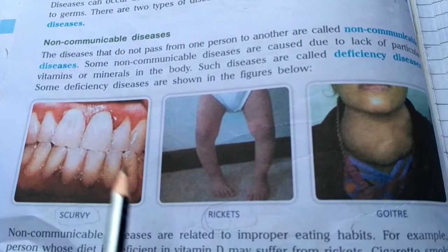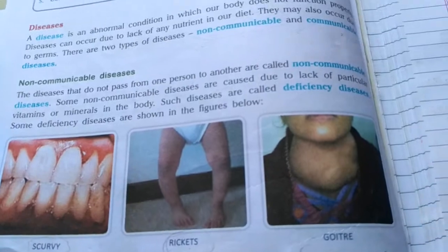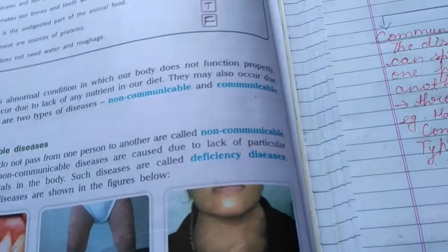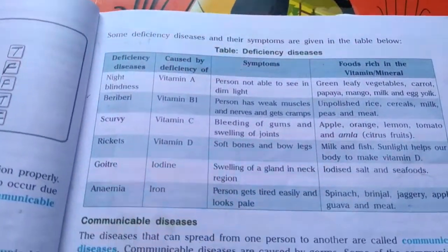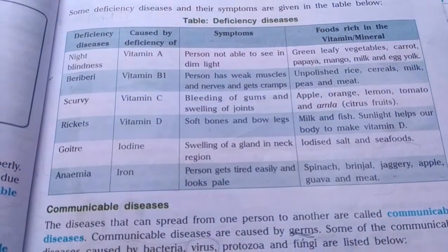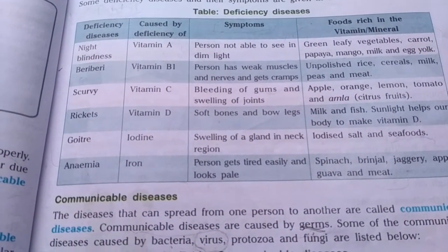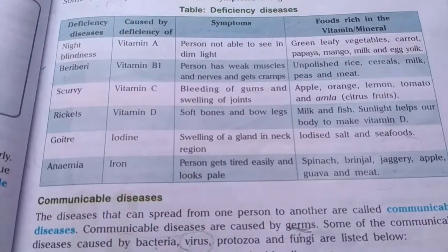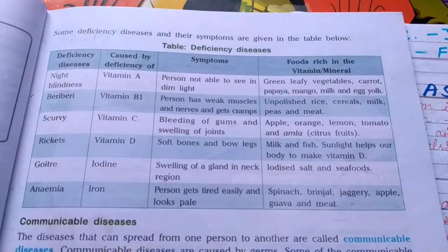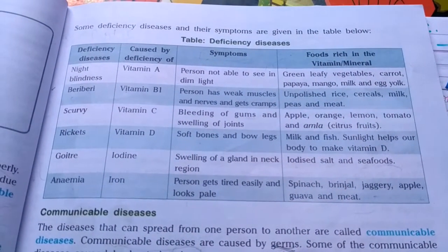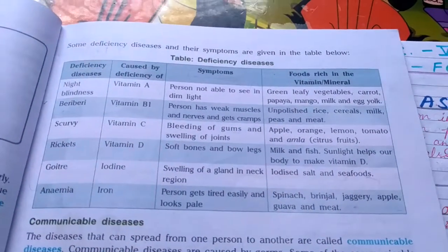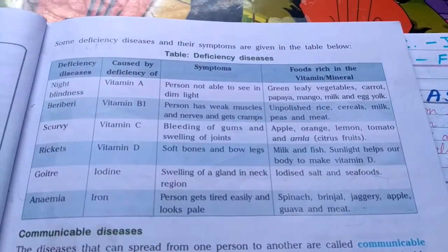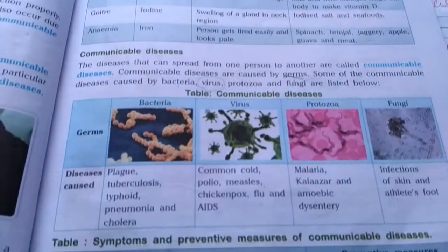Scurvy causes swelling and bleeding of gums and teeth. This topic includes an important table that I have told you about, and I have also uploaded the PDF of this lesson on the SnapBook. Please go through the lesson, do reading, and try to draw these tables in your notebook.